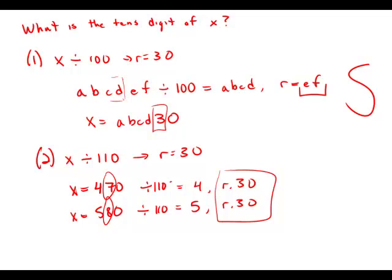And so right away, we see knowing that we have a remainder of 30 when we divide by 110 does not uniquely determine the tens place of the original dividend. So this statement by itself is insufficient. Statement number one is sufficient. Statement number two is insufficient. Answer choice A.